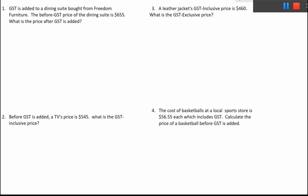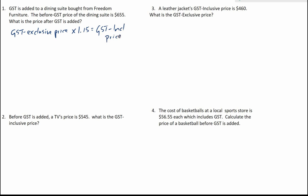This video is on GST in New Zealand. The questions here are about working out GST when it is added to a price before GST is added, and also problems that involve working backwards and finding the GST exclusive price. The formula we should be using is: GST exclusive price times 1.15 equals the GST inclusive price. In New Zealand, GST is 15%, so 15% gets added on to goods and services.